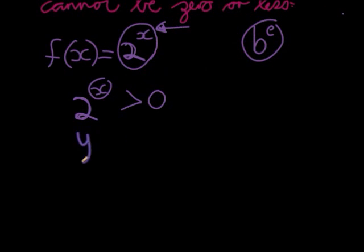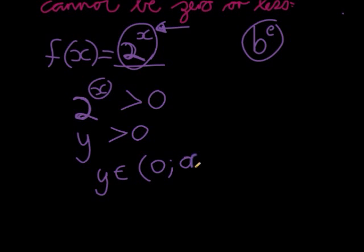Which means, in this case, that is my output. 2 to the power of x is how I calculate my output. So my output will always be bigger than zero. If I were to write this in my bracket notation,